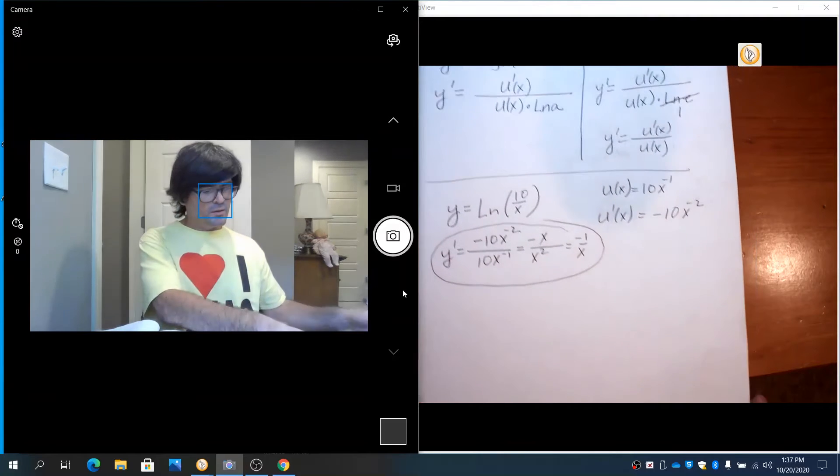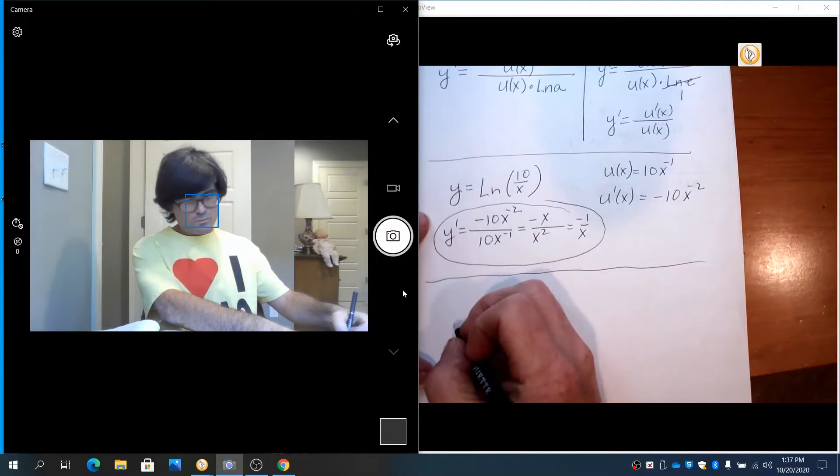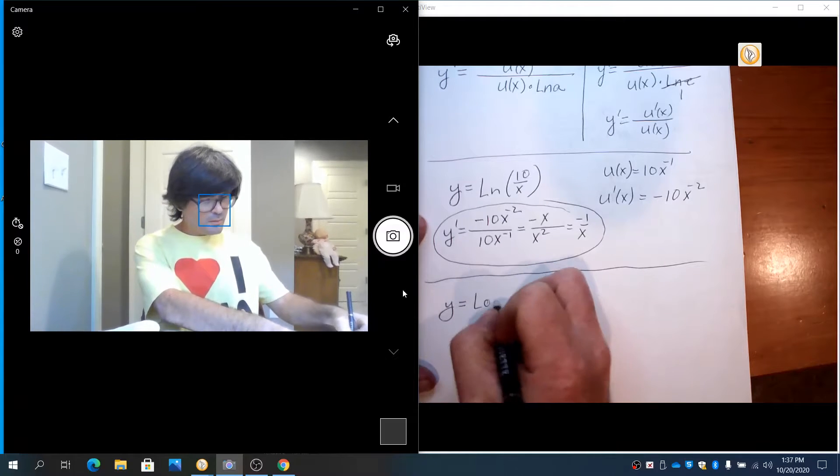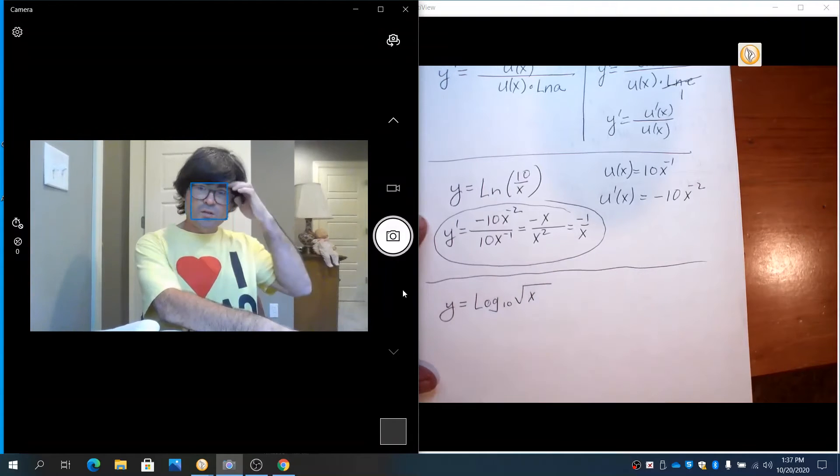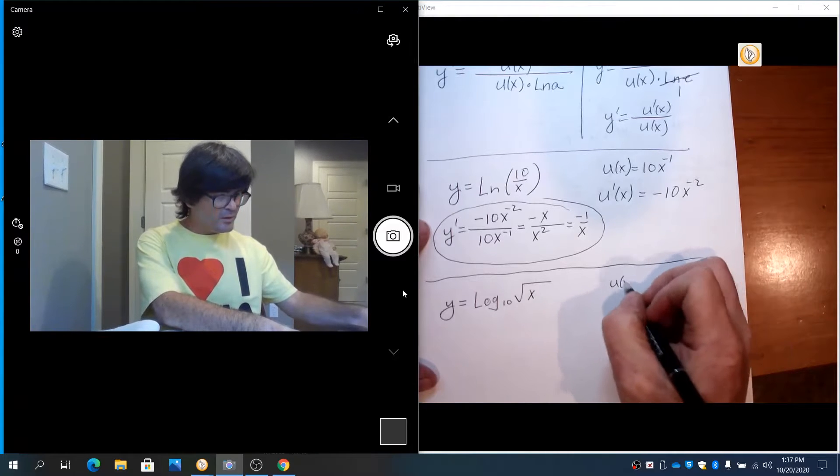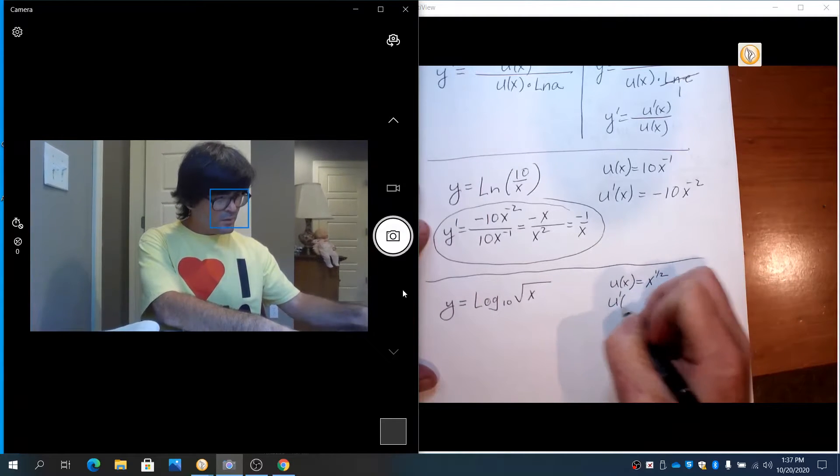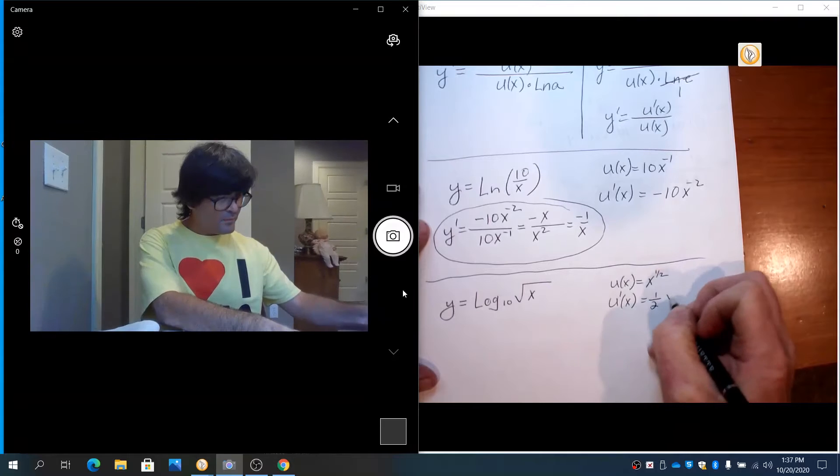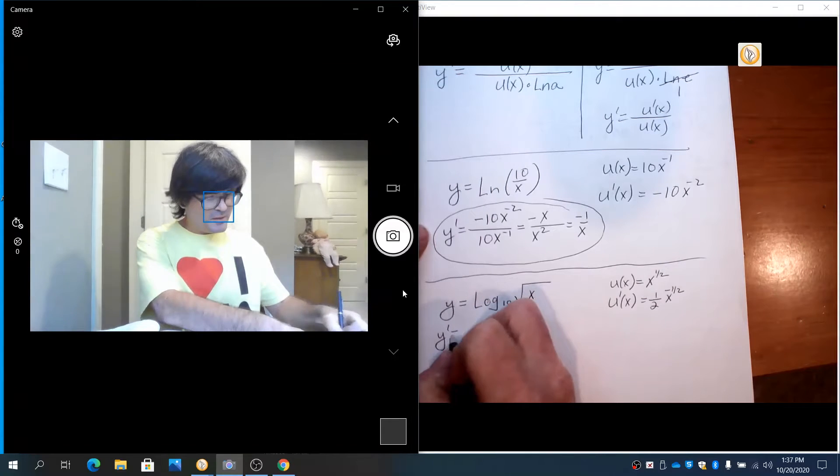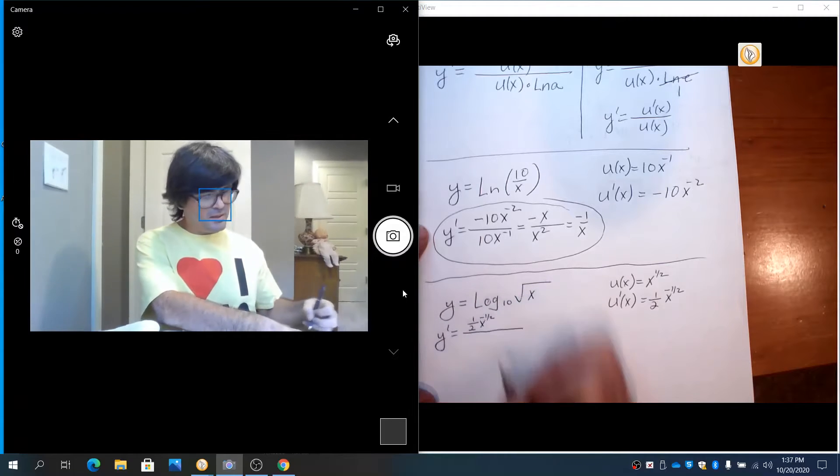Maybe we'll just try one more. We'll do y equals log base 10 the square root of x. Now this is kind of an interesting problem. I'm going to do it twice actually. The first time I'm just going to do it according to the formula. u equals x to the 1 half. u prime is 1 half x to the negative 1 half. And then my derivative is going to have those three parts. u prime goes on top, 1 half x to the negative 1 half. u goes on bottom, x to the 1 half.